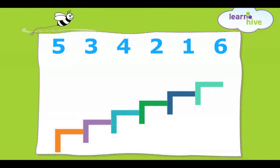Here you go. The orange step is number one. Next comes the purple step, number two. Then comes the blue step, which is number three.